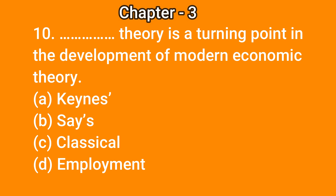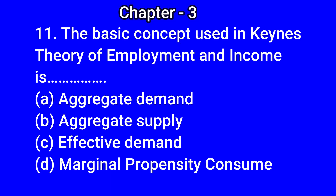...answer is (a) Keynes's. Question number 11: the basic concept used in Keynes's theory of employment and income is — (a) aggregate demand, (b) aggregate supply, (c) effective demand, (d) marginal propensity to consume. The correct answer is (c)...